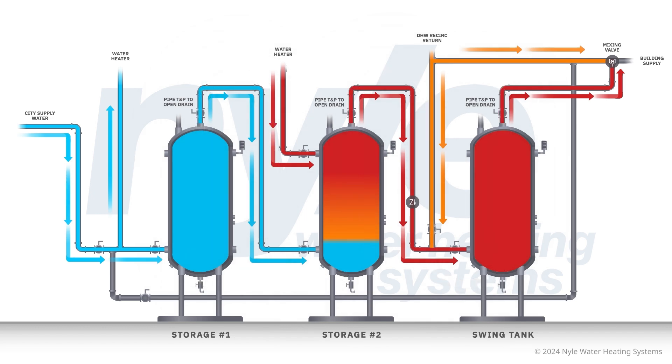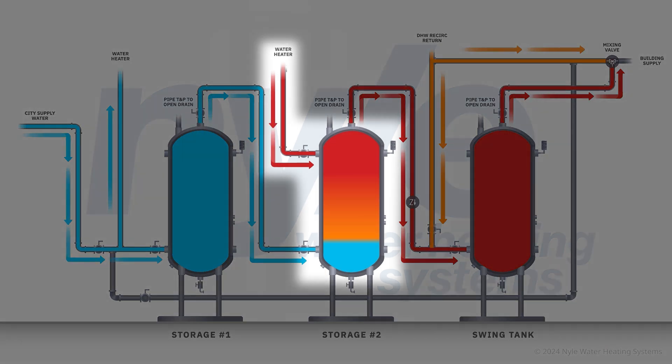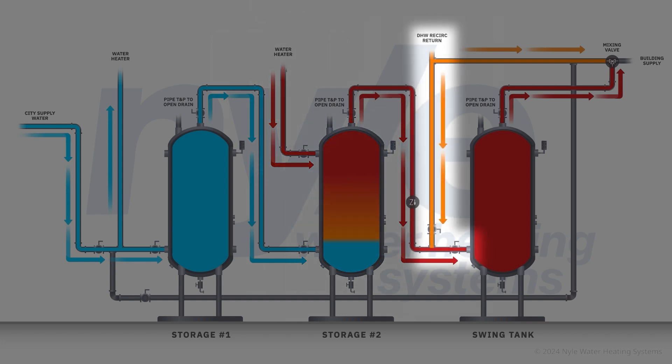As the water cools in the first tank, hot water from the heat pump is used to heat the incoming cold water from the first tank and send it to the top of the middle tank. Return water from the building's recirculation system feeds back into the swing tank.